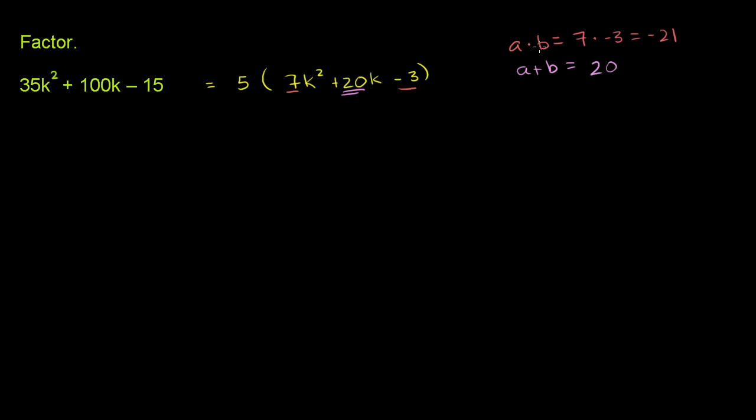Because their product is a negative number, that means they have to be of different signs. So when you add numbers of different signs, you could view it as taking the difference of the positive versions. So the difference between the positive versions has to be 20. The numbers that immediately jump out are 20 and 21.